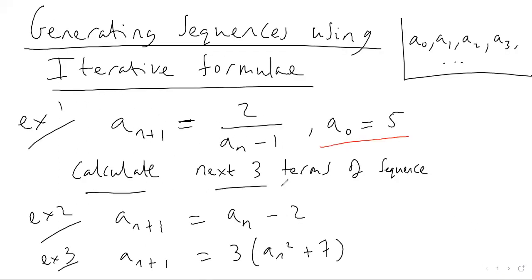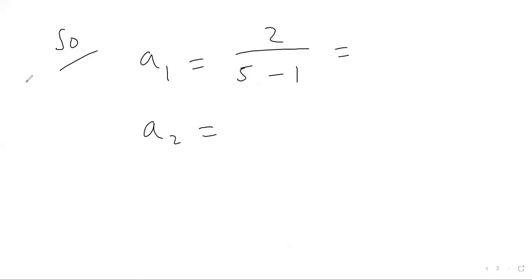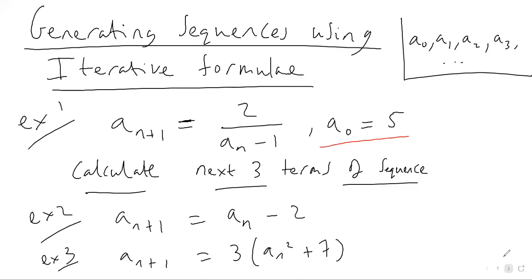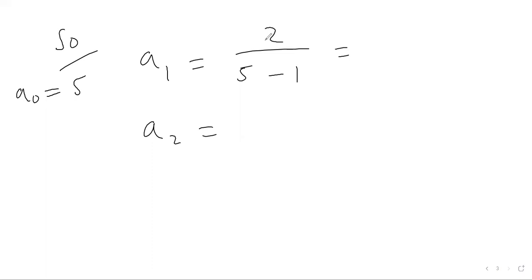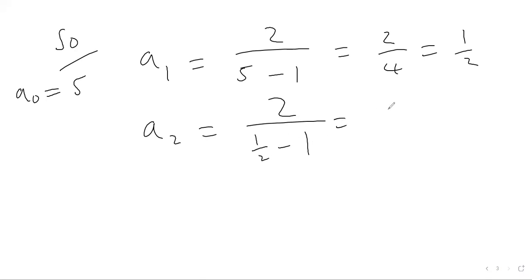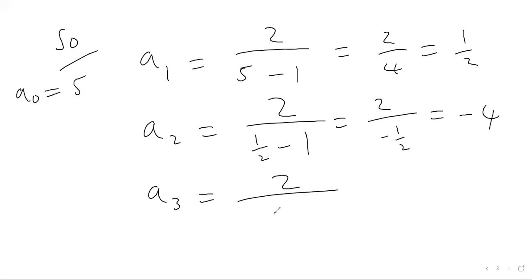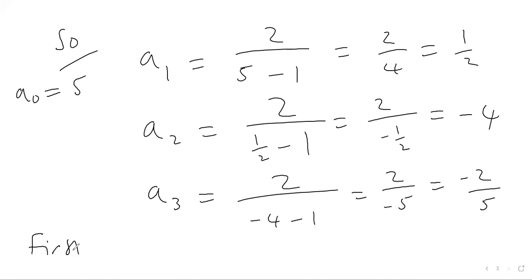Going back to the first example — calculate the next three terms. Our first term is a_zero equals five, so we plug that in: two divided by five take away one gives two divided by four, which is a half. Then two divided by a half take away one gives two over negative a half, which is negative four. Then two divided by negative four minus one gives two over negative five, so we get negative two-fifths.